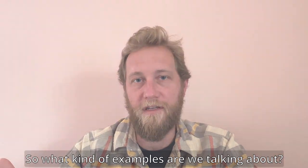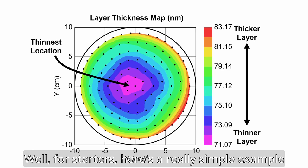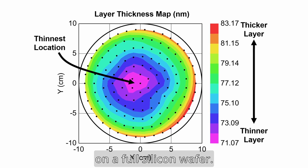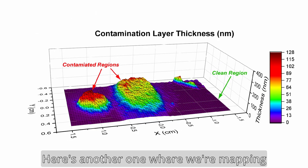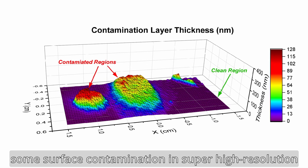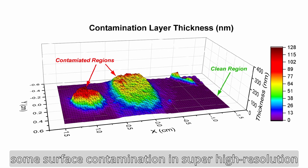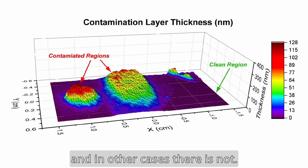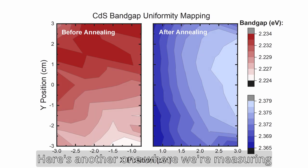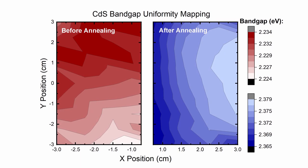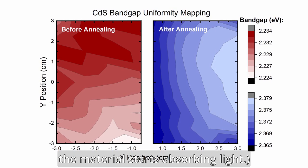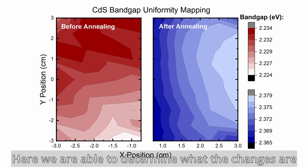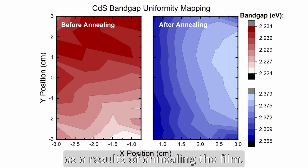What kind of examples are we talking about? For starters, here's a really simple example where we're mapping the thickness of a layer on a full silicon wafer. Here's another one where we're mapping some surface contamination in super high resolution over a very small area, where in some cases there is contamination and in other cases there is not. Here's another one where we're measuring the optical bandgap of a film — that's the wavelength at which the material starts absorbing light — and here we're able to determine what the changes are as a result of annealing the film.